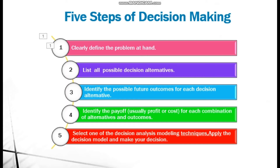These are the five key steps to consider in decision making. First, define the clear problem at hand. Second, list the possible decision alternatives for your business. Third, identify the possible future outcomes for each decision. Fourth, identify the payoff — what payoff you get from each of the alternative outcomes. Fifth, after comparing all the alternatives, select the best one.